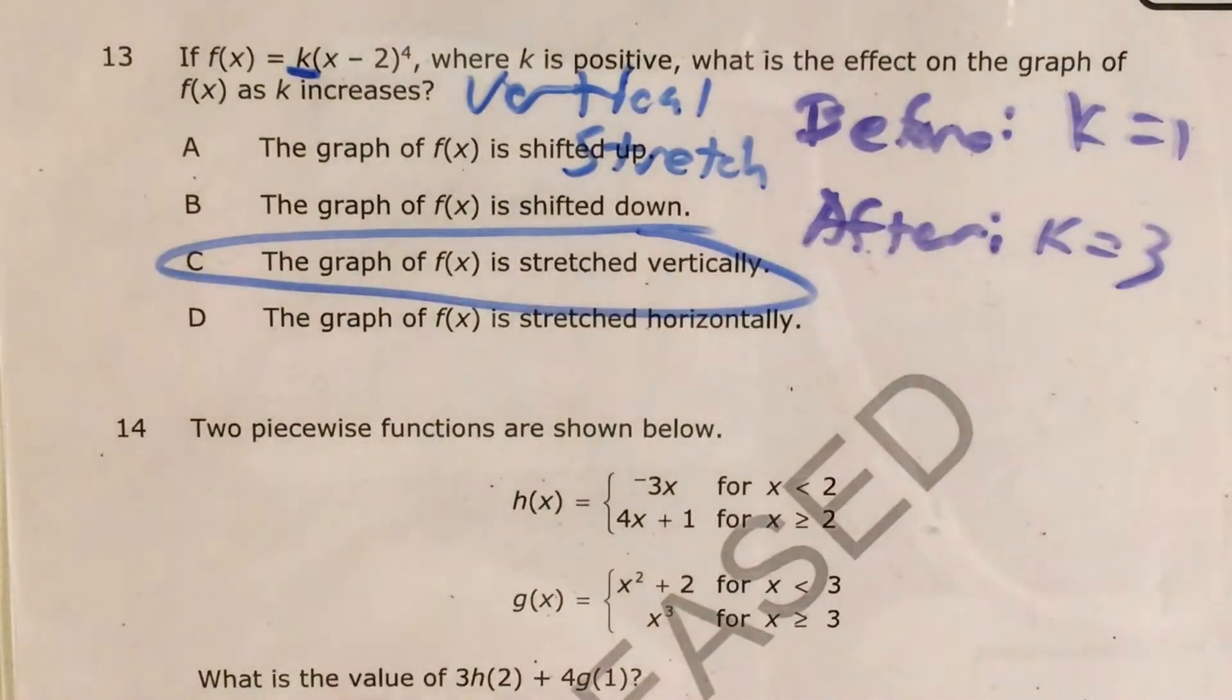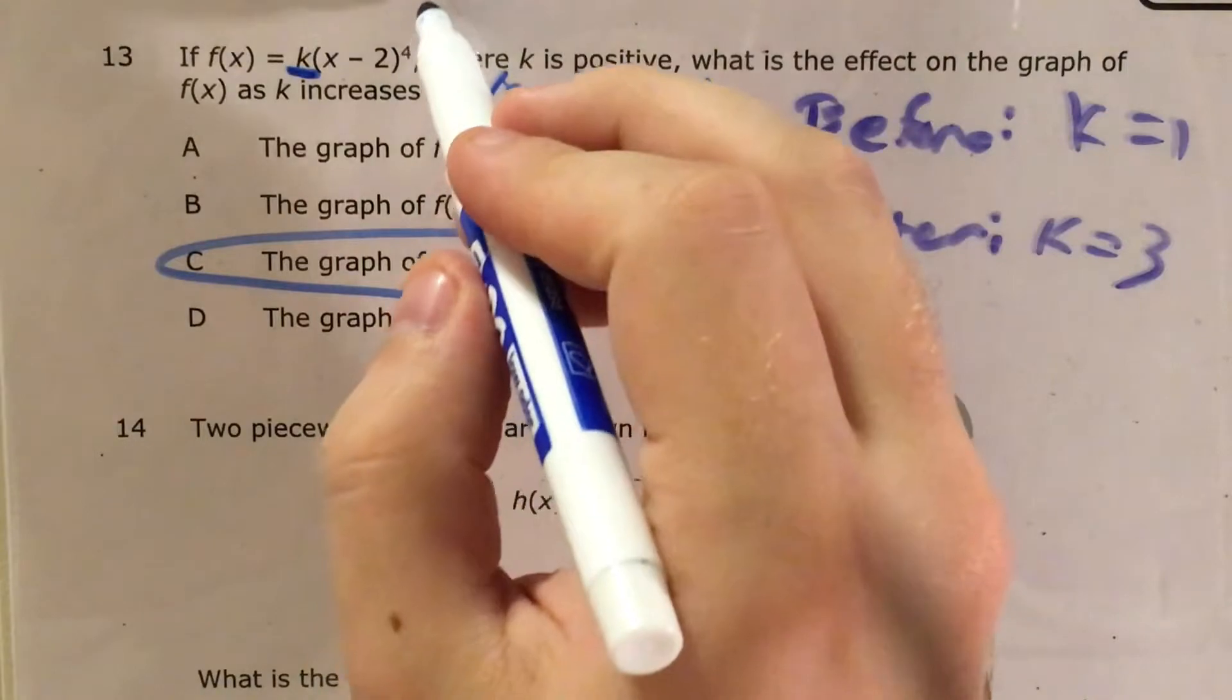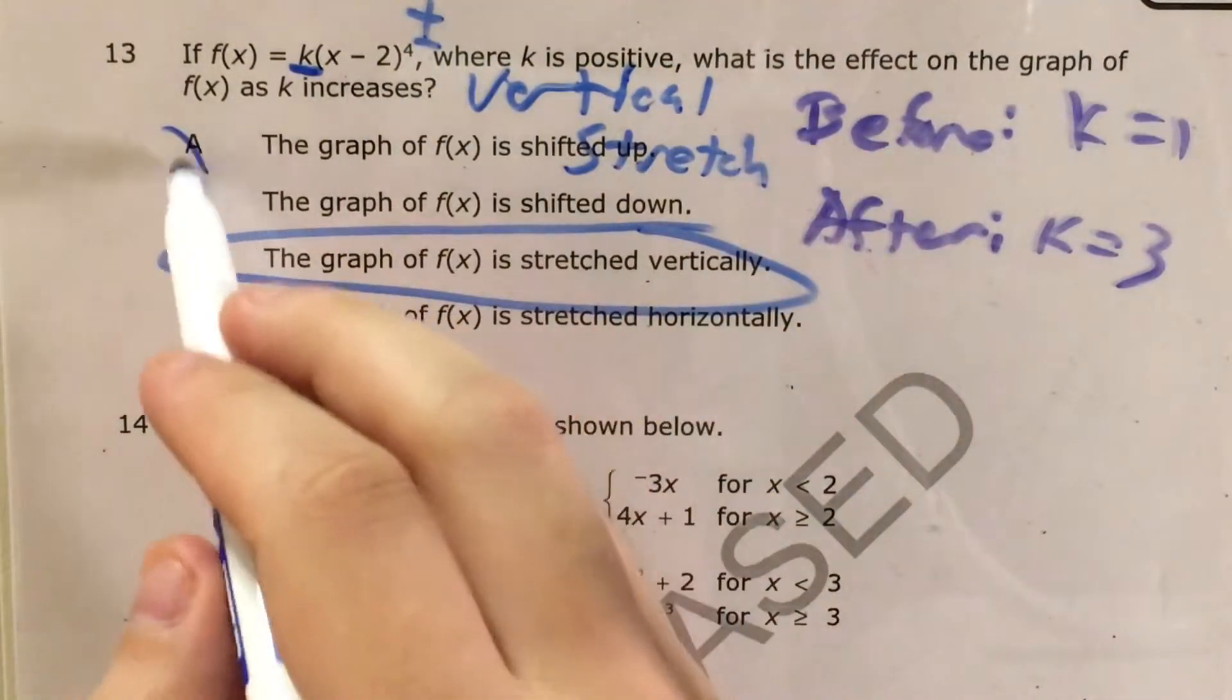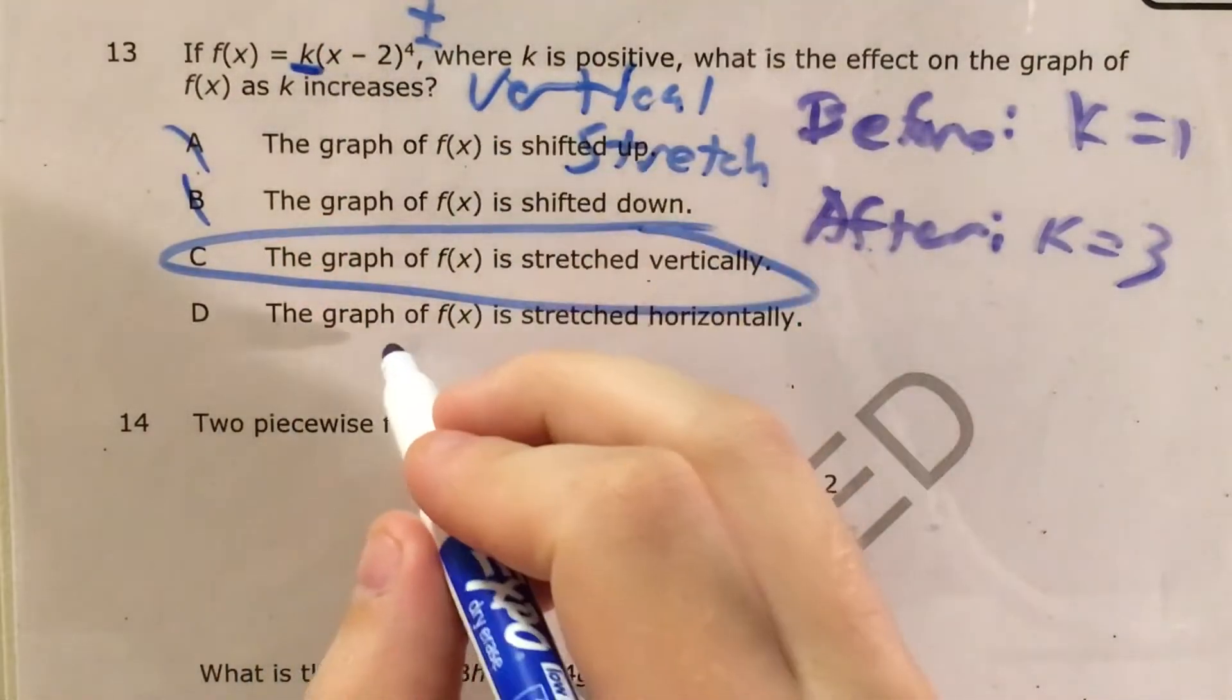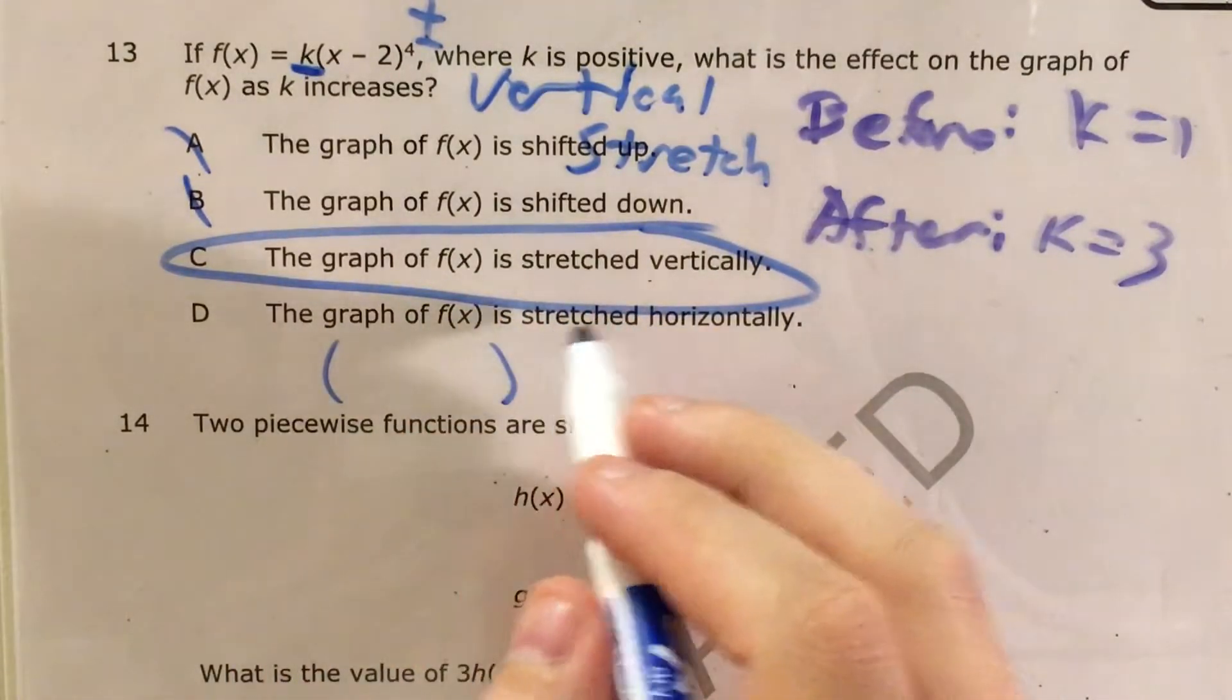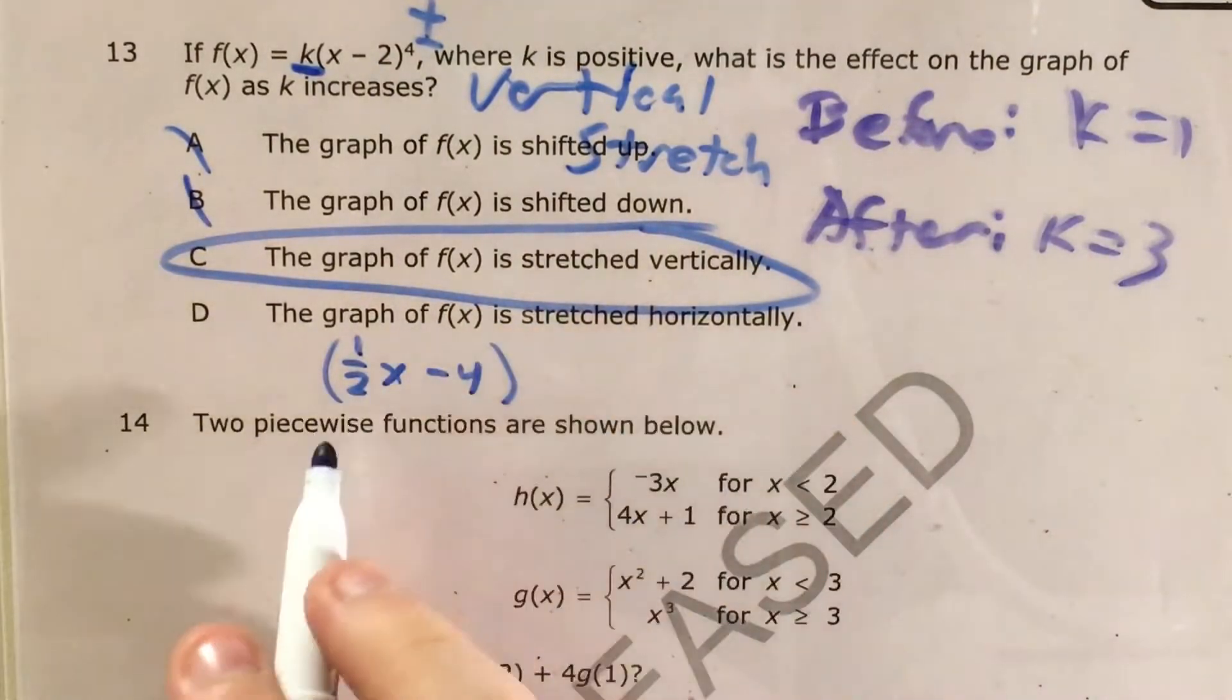So, stretched vertically. Now, shifted up and shifted down, that would be if we added or subtracted some number outside our parentheses here. And then horizontal stretch is what happens when we have some number inside the parentheses multiplied by x. And actually, horizontal stretch is what happens when this number that we're multiplying by x gets smaller, gets closer to zero. So that's a quick overview of the different kind of transformations you'll see.